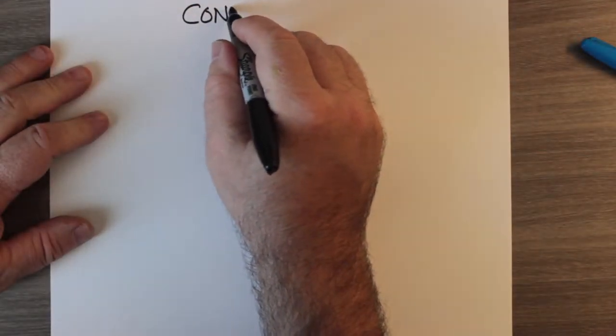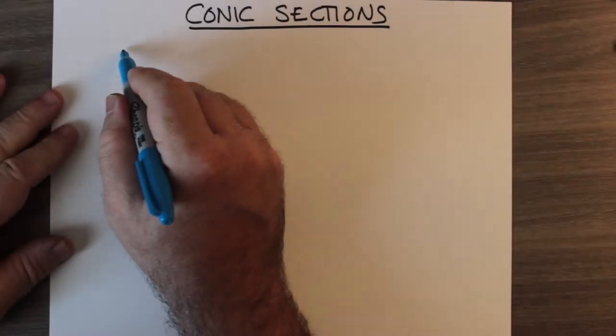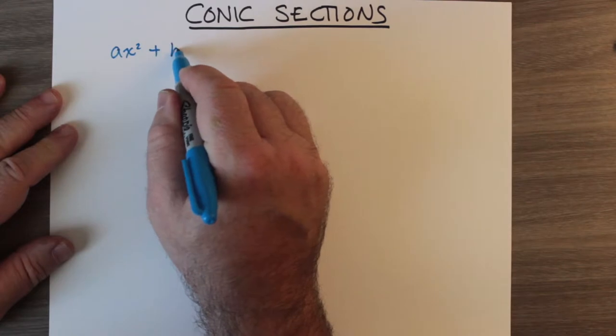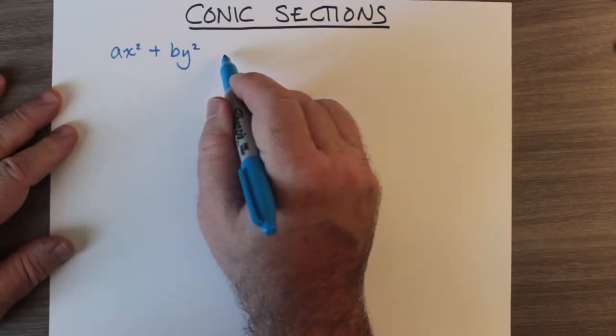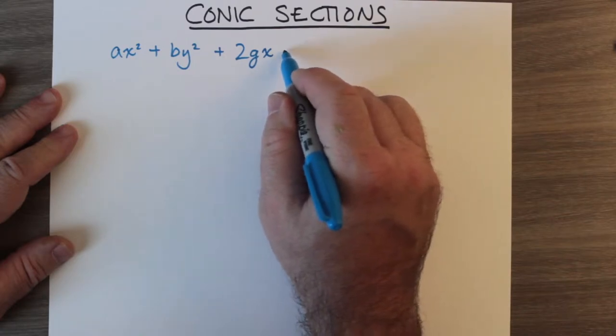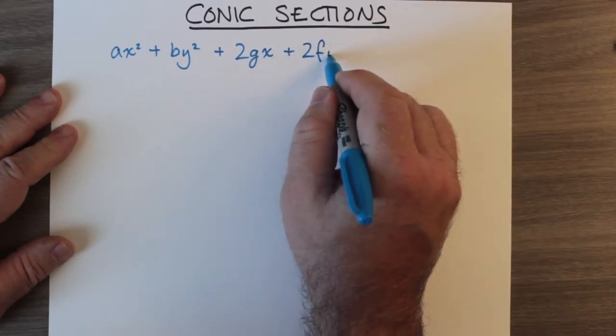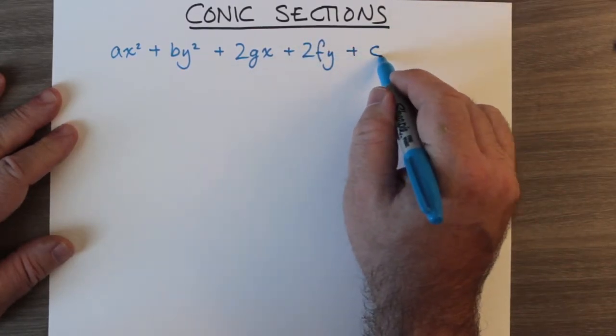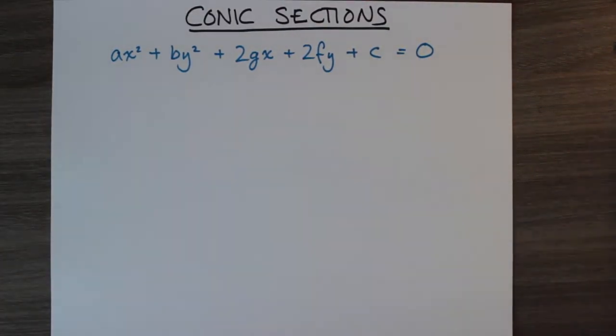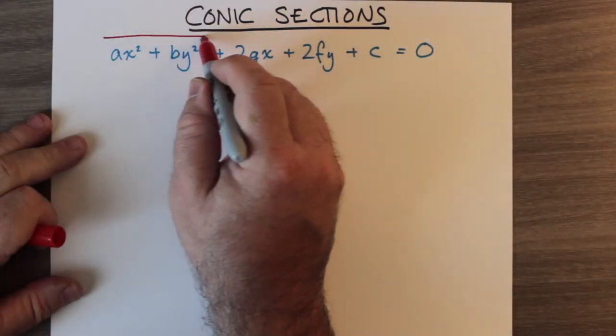Right now we'd like to talk about conic sections. Pretty much any conic section can be defined by the polynomial ax² + by² + 2gx + 2fy + c = 0. Of course a, b, g, f, and c can be any real number you like, including negative numbers.